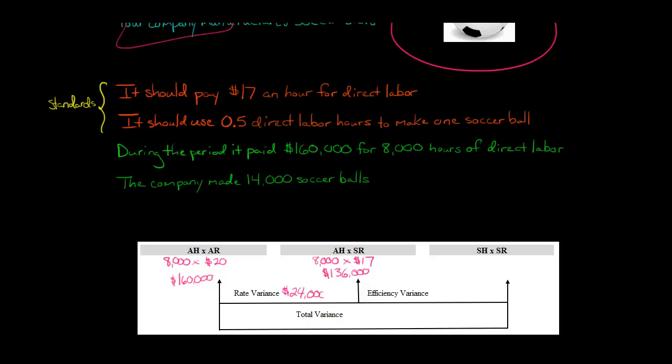Now, the question is, is our labor rate variance favorable or unfavorable? Well, let's think about it. So our standard, according to management, is that we should pay $17 an hour for direct labor. That's what we should be paying. So we, in fact, paid $20 an hour. So we overpaid. We paid too much, so we would say this is an unfavorable labor rate variance.